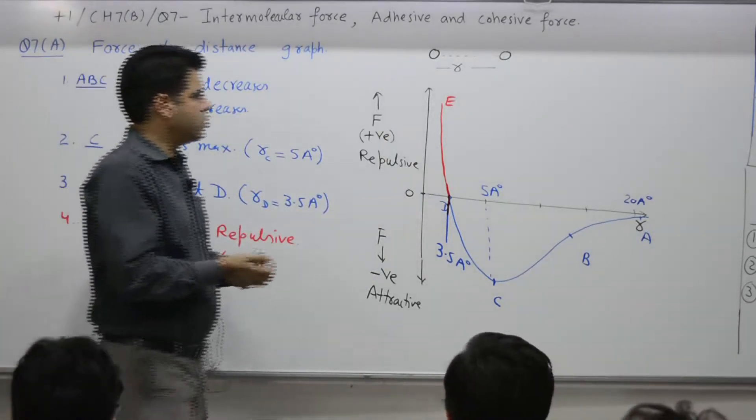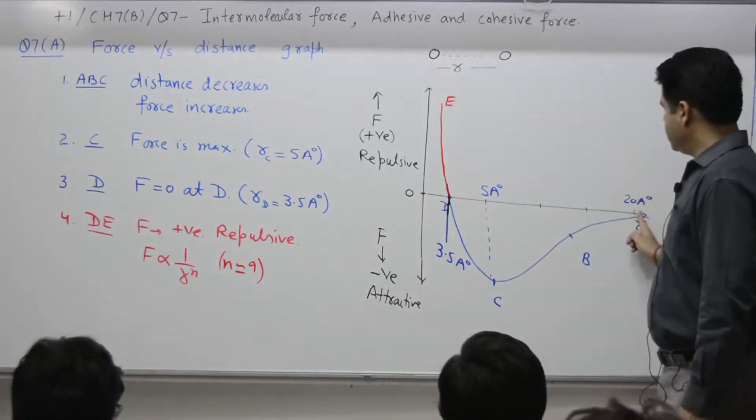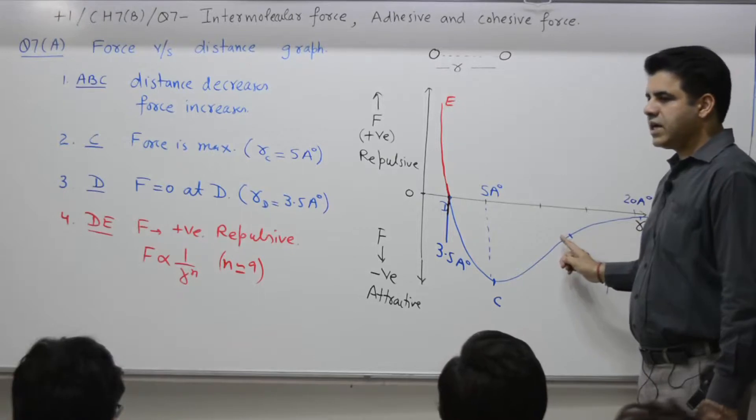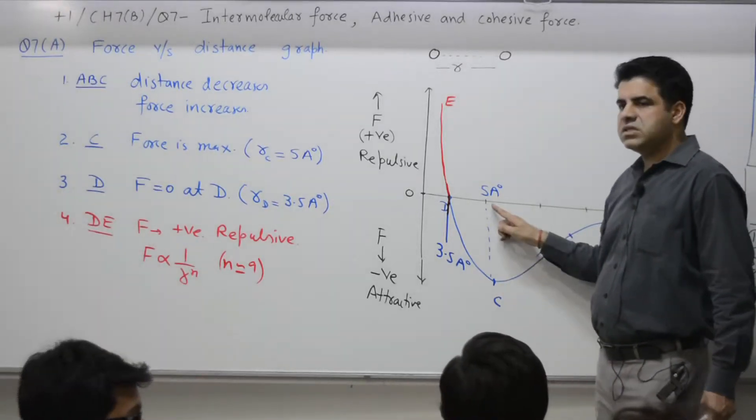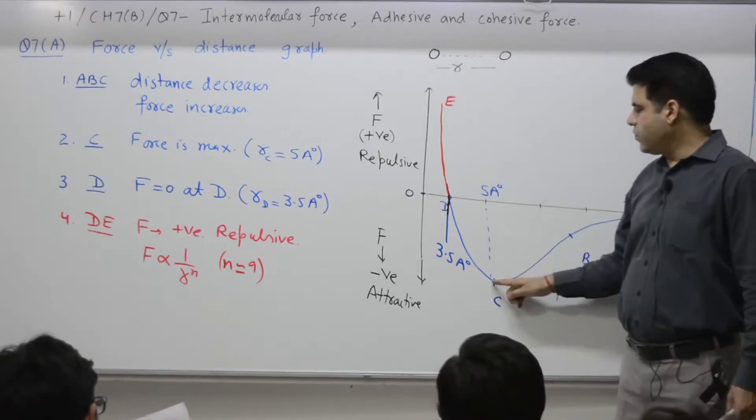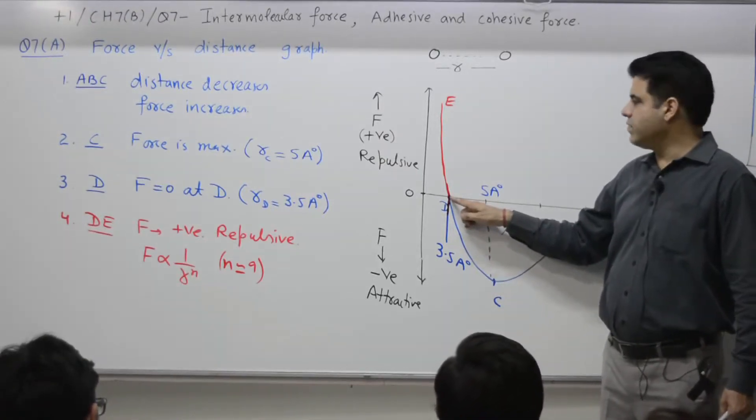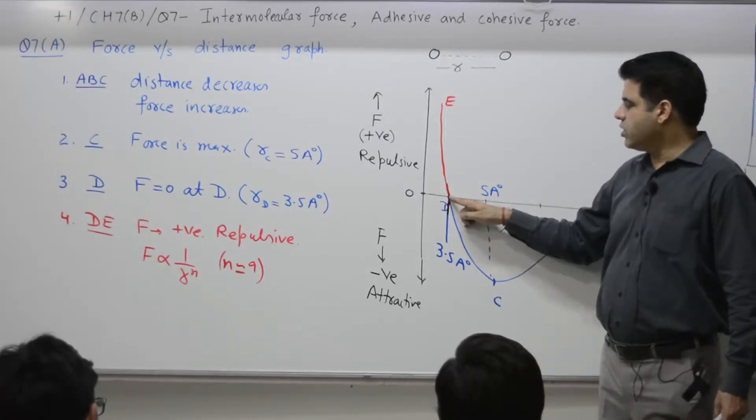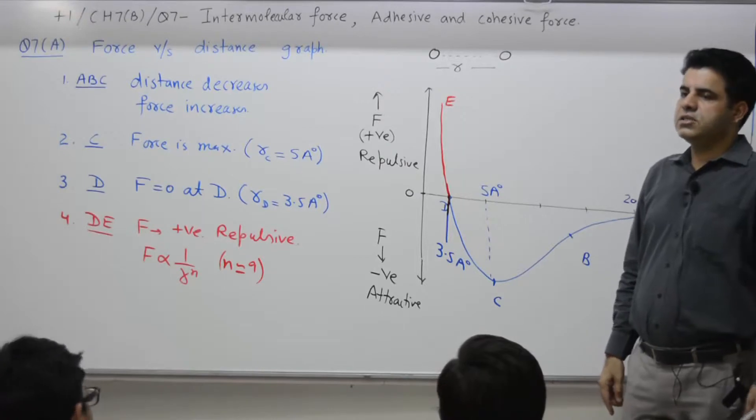The conclusion is, as the distance between the two decreases, the pattern is: force is attractive and keeps on increasing, becomes maximum at 5 angstroms. If you further decrease, force becomes zero at 3.5 angstroms. If you further decrease from 3.5 to 3 or 2, then it is repulsive. Why is it repulsive?